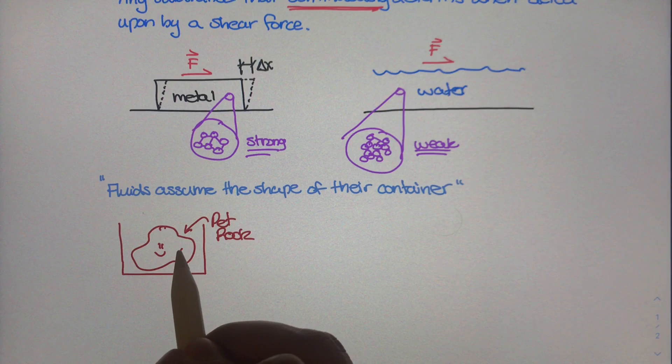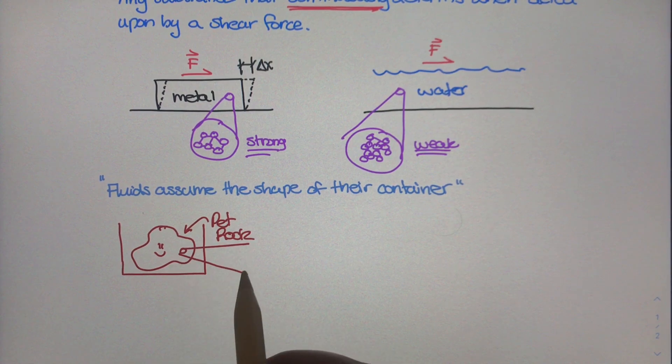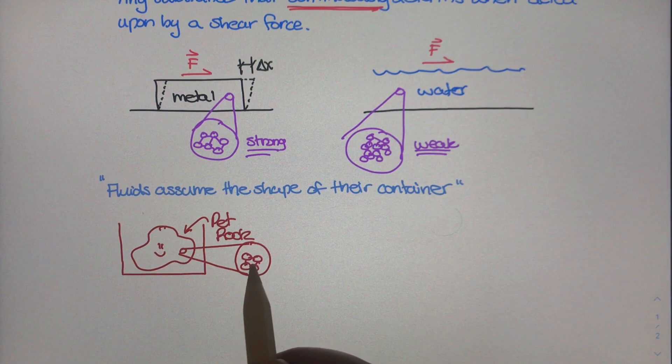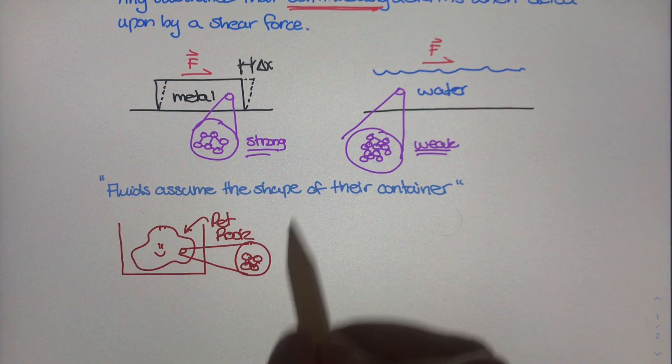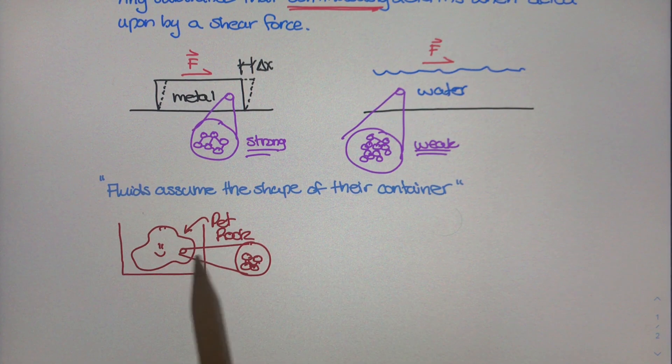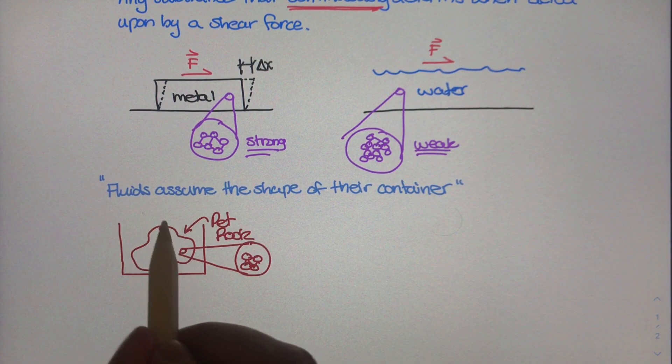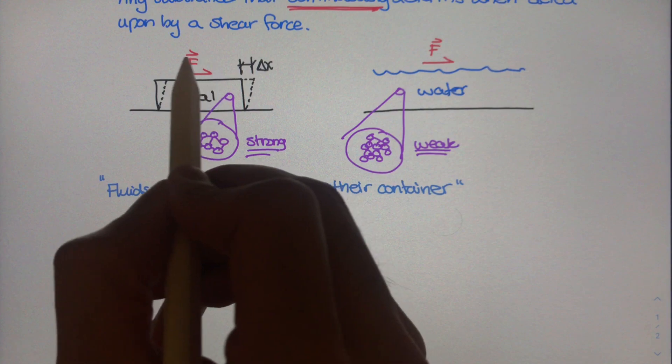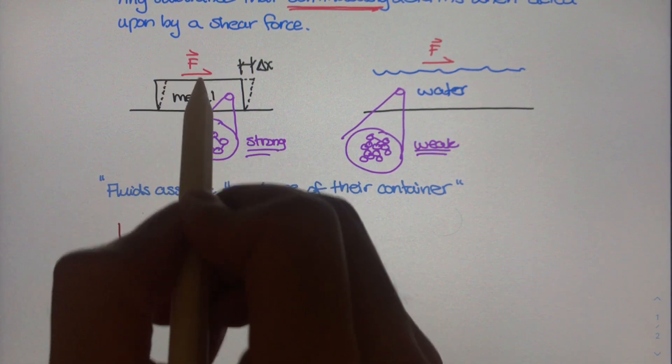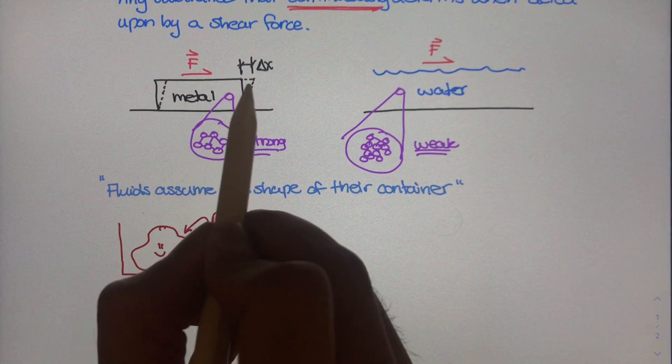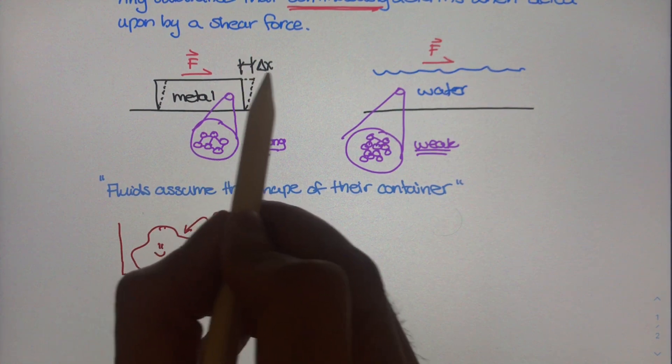In other words, if we looked at the molecules that make up this rock, the actual bonds between the molecules are very, very strong. The rock won't deform unless it's acted upon by some external force, very similar to this metal box that we were studying. We had this external shear force and that's what caused this metal box to deform some delta x.